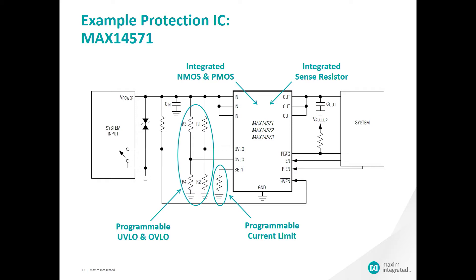You can use the UVLO and the OVLO pins to program the under voltage and over voltage lockout thresholds. The SETI pin is used to program the over current limit by connecting a resistor from SETI to GND.